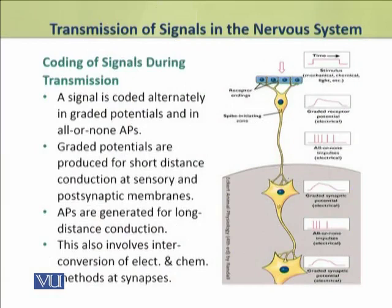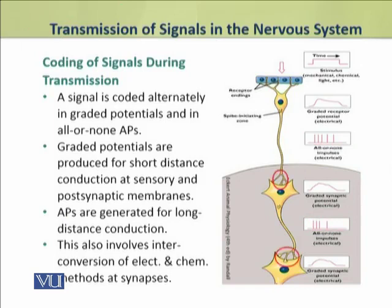A signal is coded alternately in these two forms, i.e., graded potentials and action potentials. Graded potentials are produced for short distance conduction at the sensory and postsynaptic membranes, while action potentials are generated for long distance conduction along the axons. This coding also involves interconversion of electrical and chemical methods at synapses.